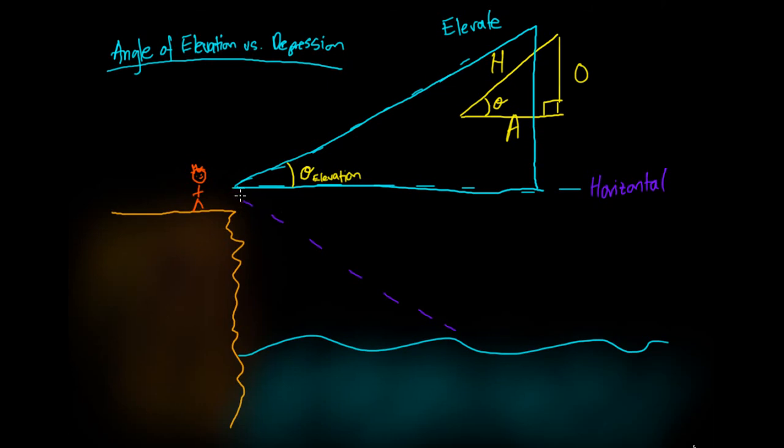Or you can look down, so you just keep looking straight down. Likewise, you're going to form a triangle here, so you form a triangle here and you're going to have another angle here. So this here, we call it the angle of depression.